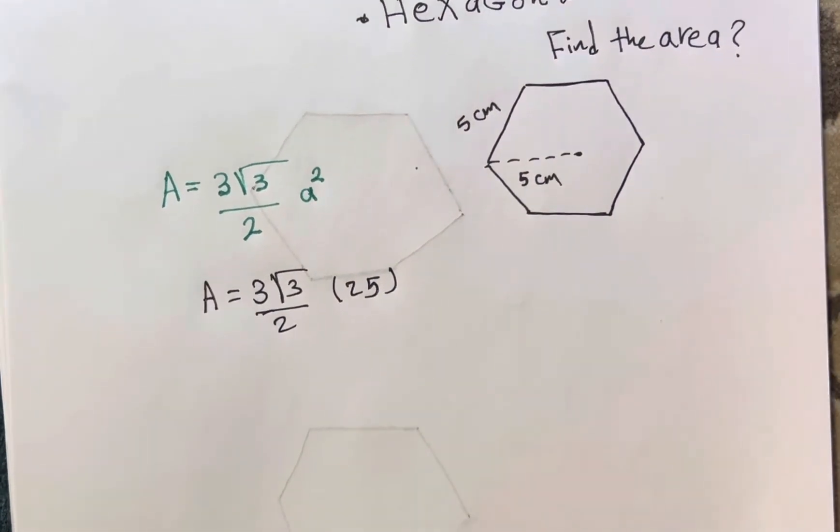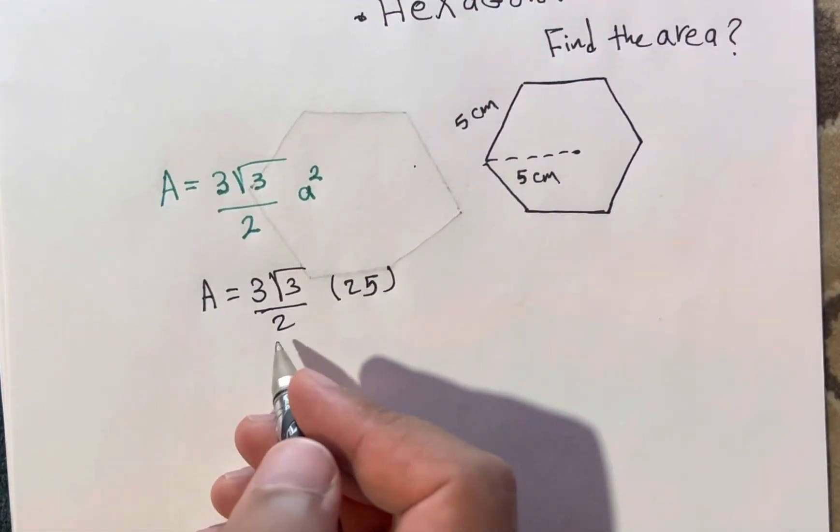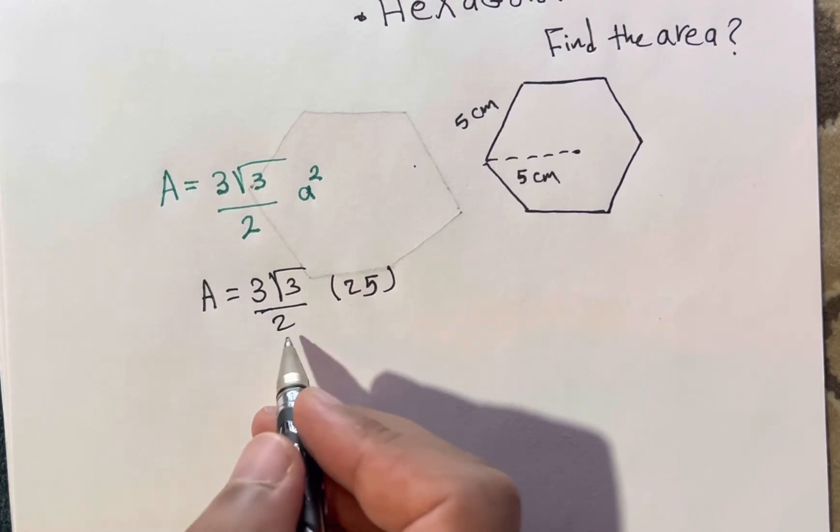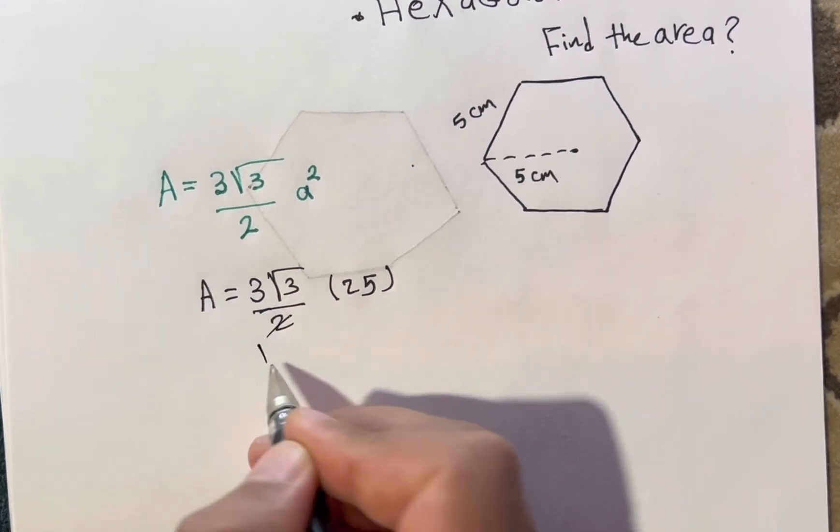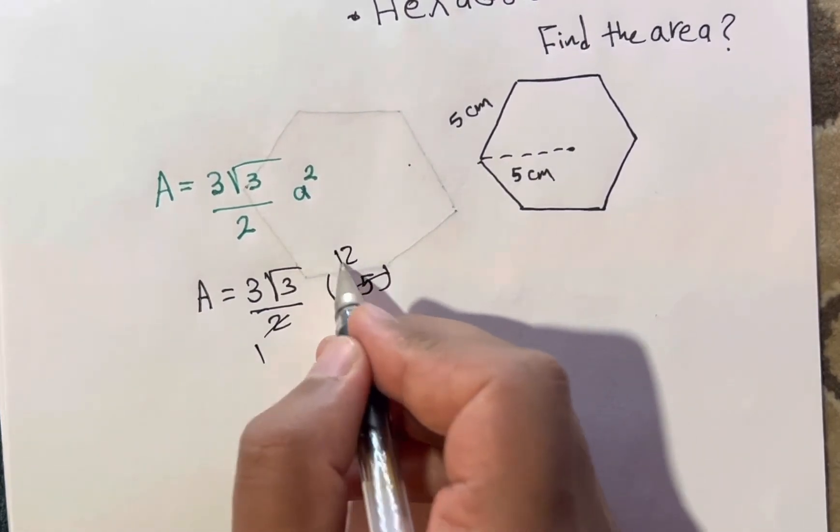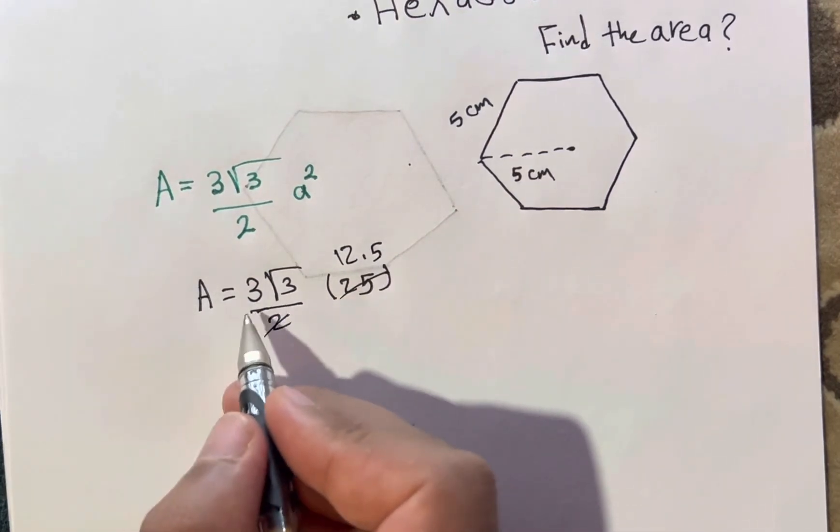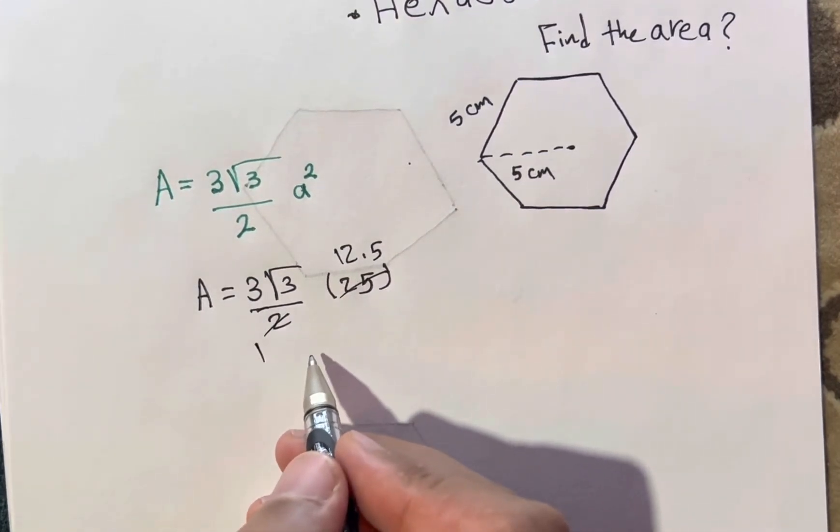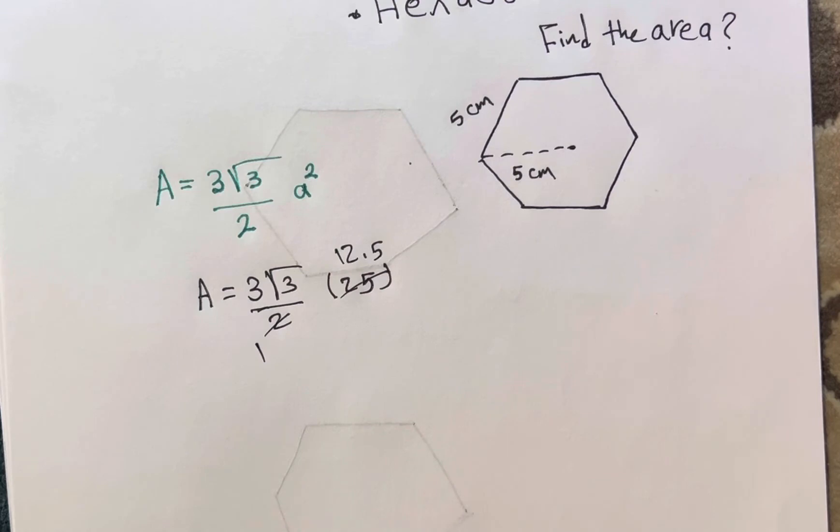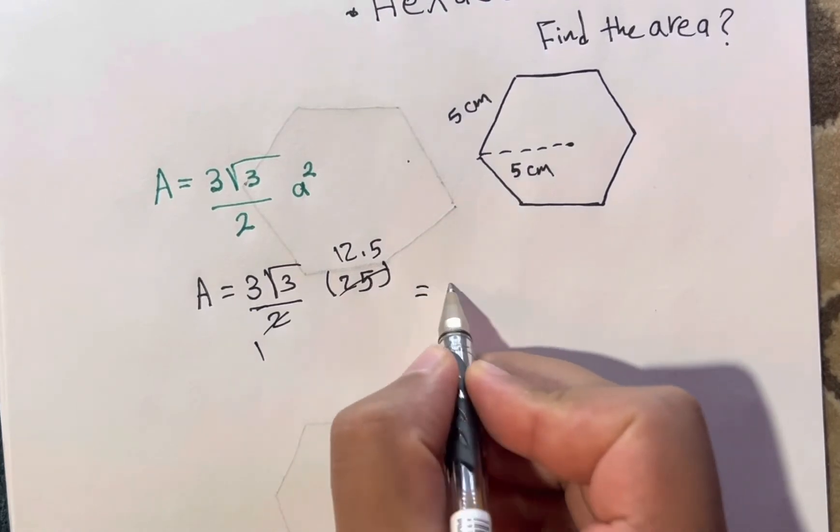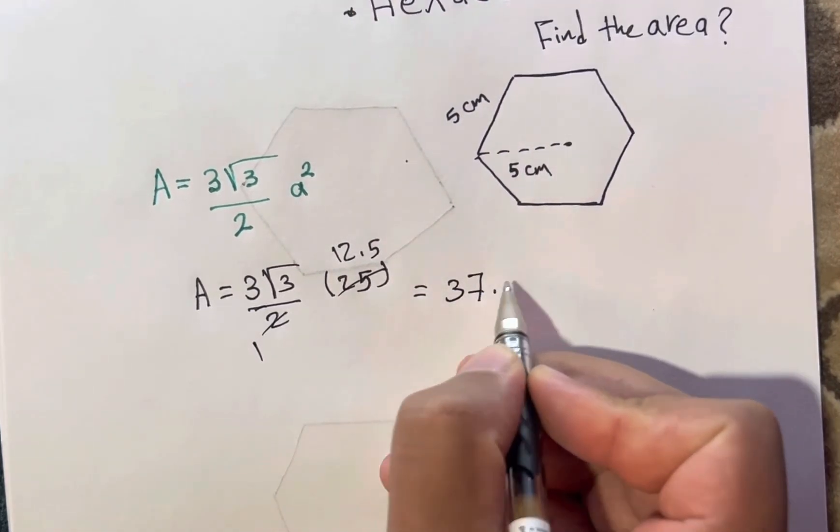After that, you are going to simplify. If you divide by two, it will be 12.5, then multiply three times 12—it will be 36—and three times half is 1.5, so 36 plus 1.5 equals 37.5 square root of three, and here centimeter squared.